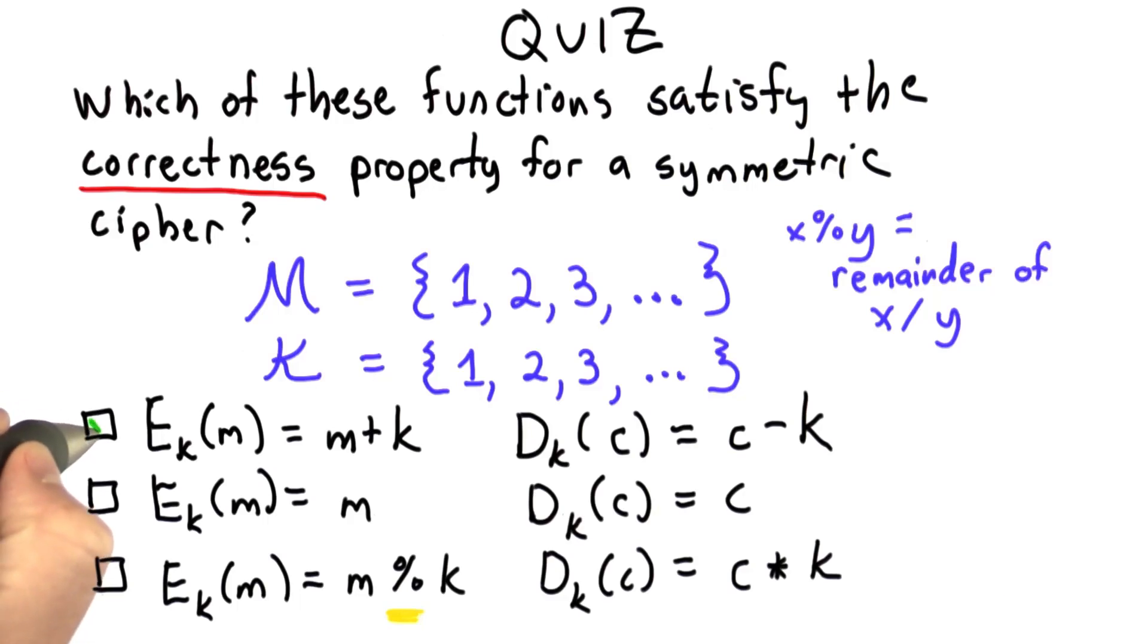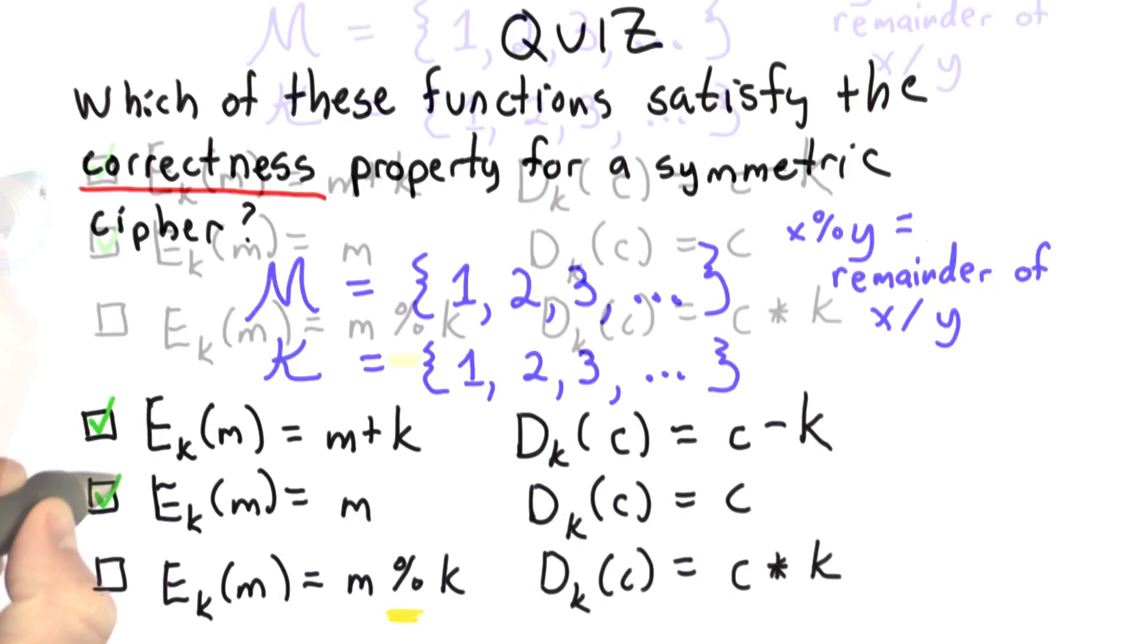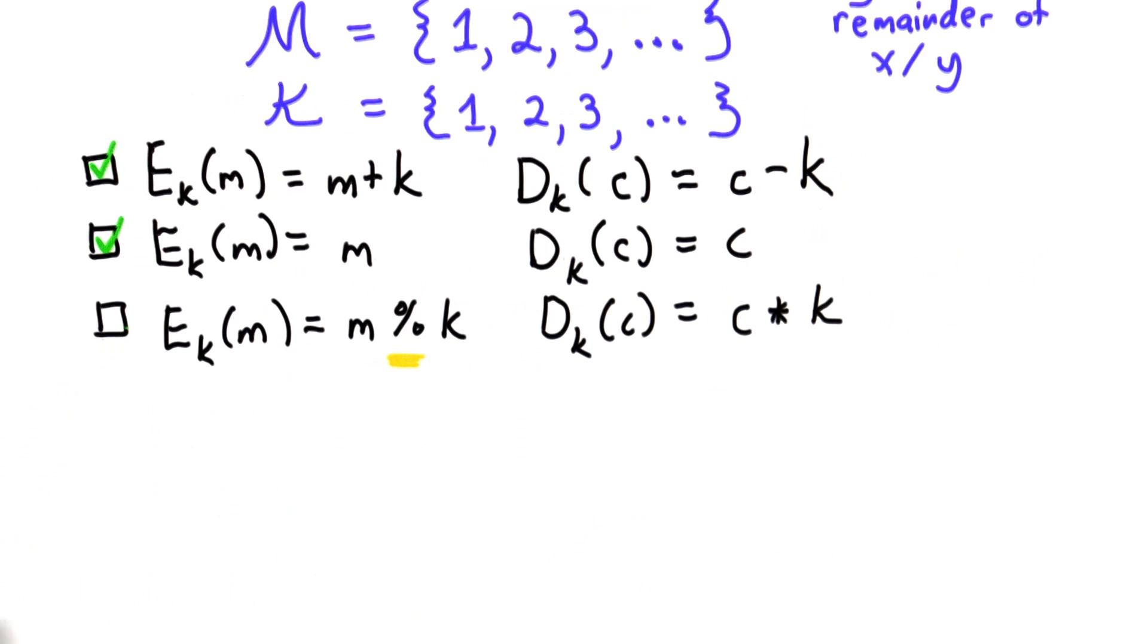The answer is the first two of these do satisfy the correctness property. The third one does not. And to understand why...